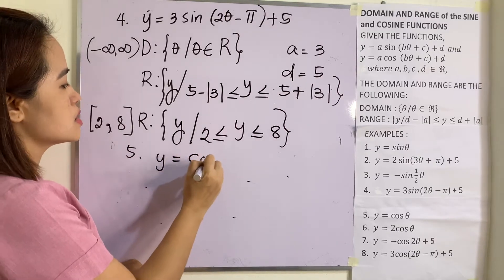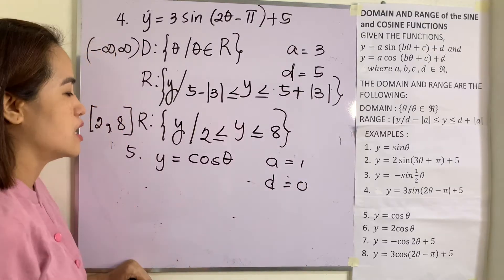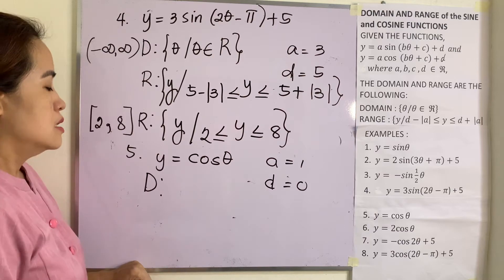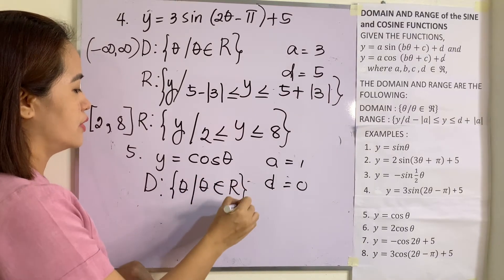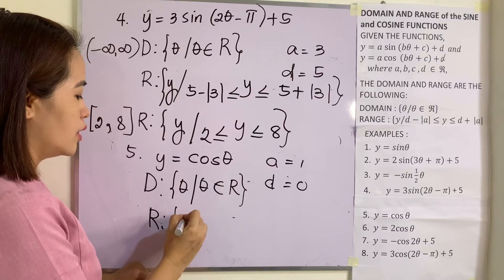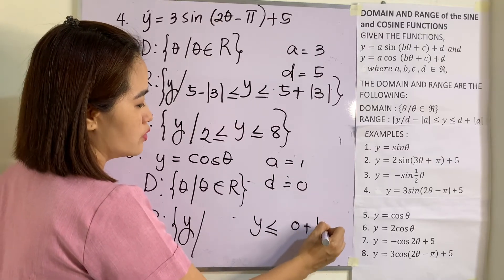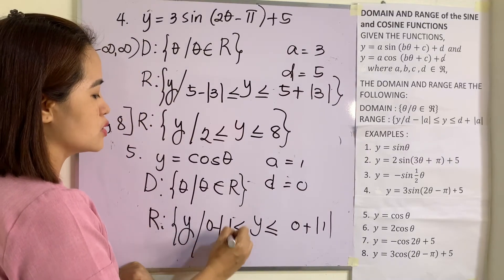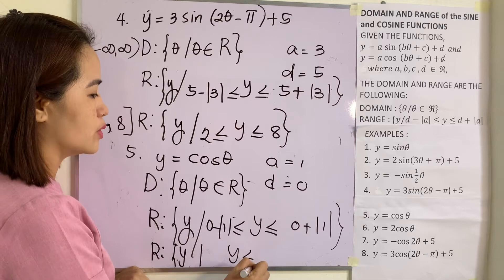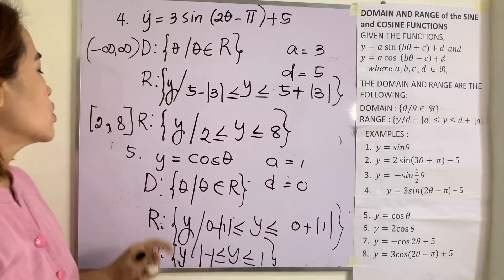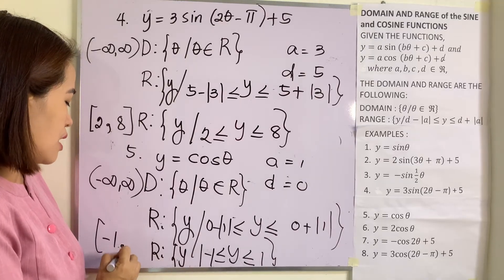Example 5: y = cos θ. Here a = 1 and d = 0. The domain is the set of all θ such that θ is any element in the set of real numbers. For the range: y ≤ 0 + |1| and y ≥ 0 − |1|, so the range is y ≤ 1 but y ≥ −1. In interval notation, domain is (−∞, +∞) and range is [−1, 1].